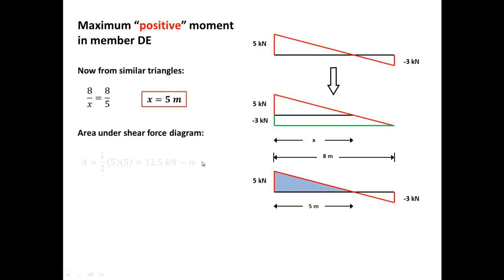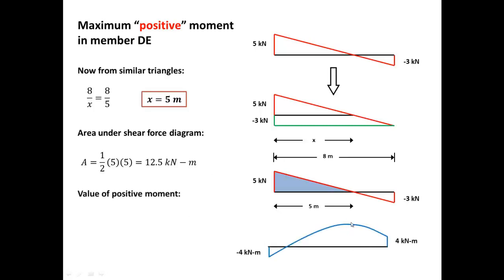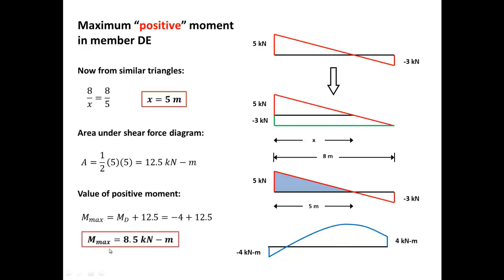Now I can calculate the area under the shear diagram. That area is 12.5 kilonewton-meters. But is that the maximum moment? No — that area gives 12.5 only if you start your diagram from zero. But we started from negative four, so you need to add negative four to this number. The maximum moment turns out to be 8.5 kilonewton-meters.